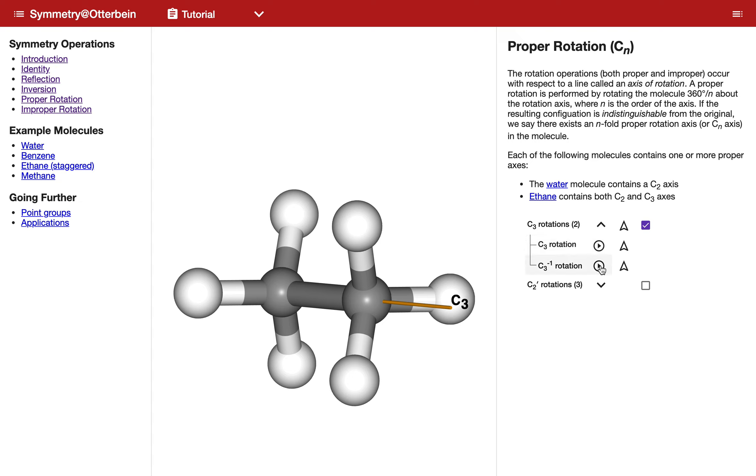Now there's another rotation that goes in the opposite direction, or it would be two successive operations of this first C3 operation. So both of those exist as distinct operations associated with this particular symmetry element.